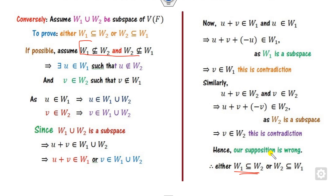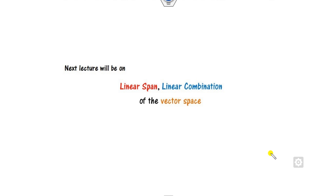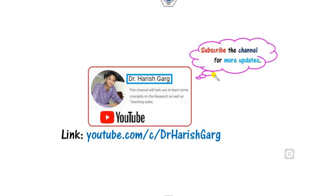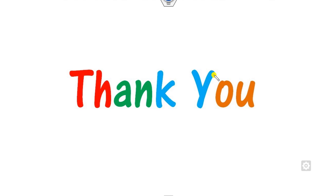This is the simple proof of the union and intersection of subspaces. We will see you in the next lecture on linear span and linear combinations. Till then, you can follow the link to find various videos. Best of luck students, happy learning.